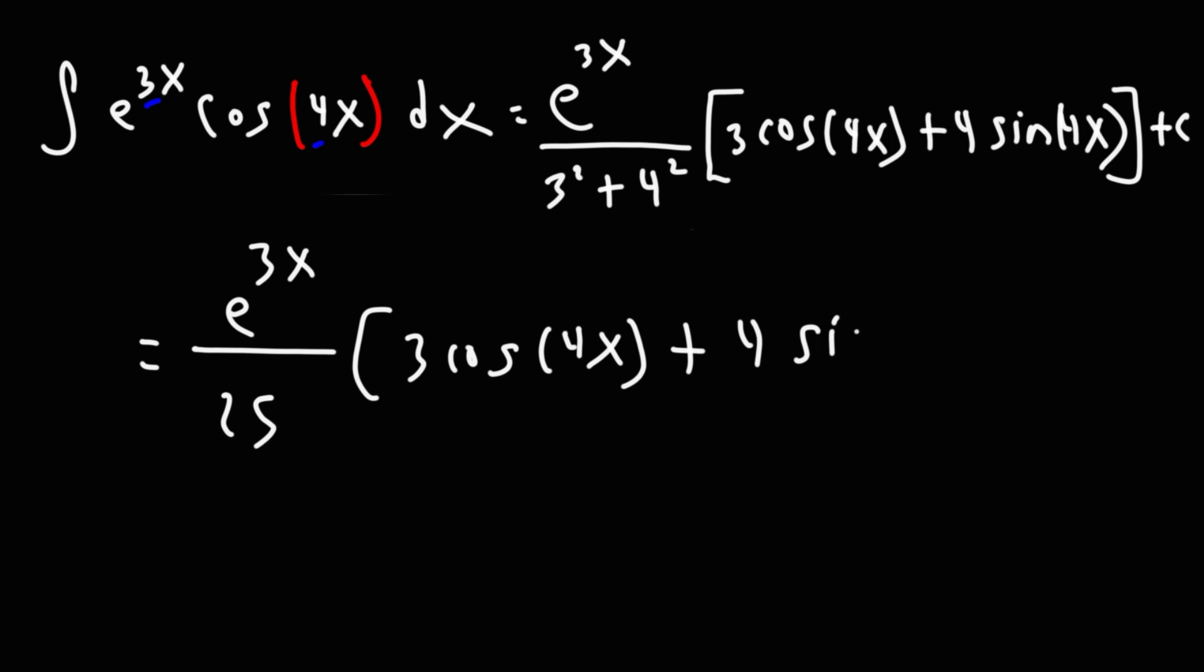Now, what I'm going to do next is factor out a 3. If I factor out a 3 from what's inside here, I'm going to divide each of these by 3. So when I factor out a 3 from 3 cosine 4x, I'm just going to have cosine 4x. But the 3, I'm going to put in front of the e to the x.